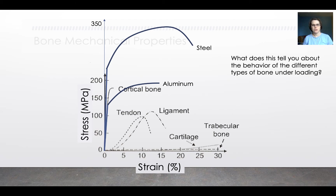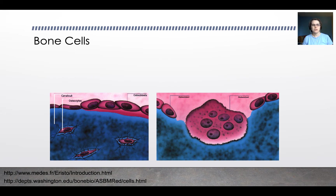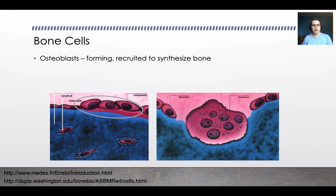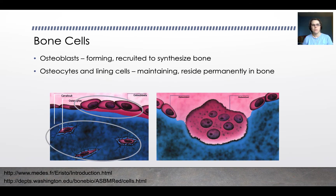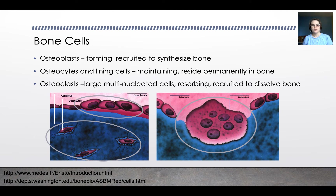We're going to be focusing on cortical and trabecular bone, but first I want to talk about the different things that make up bone. There are three types of cells in bone: osteoblasts, which form, recruit, and synthesize cells to create bone; osteocytes and lining cells, which maintain the bone and reside permanently in it; and osteoclasts, which are large cells with multiple nuclei dedicated to resorbing bone. Bone is a constantly remodeling tissue — one of the reasons it heals so well when it breaks.